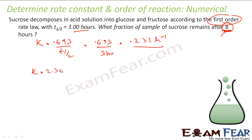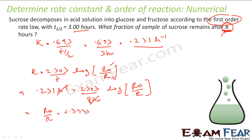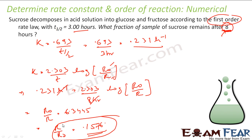Using the golden formula: K = 2.303/T × log(R₀/R), where R₀ is initial and R is final concentration. K = 0.231 per hour, T = 8 hours — hours cancel. We want the fraction R/R₀. Solving, R₀/R = 6.3055, therefore R/R₀ = 1/6.3055 = 0.1576. So only 0.1576 fraction of sucrose remains after 8 hours.